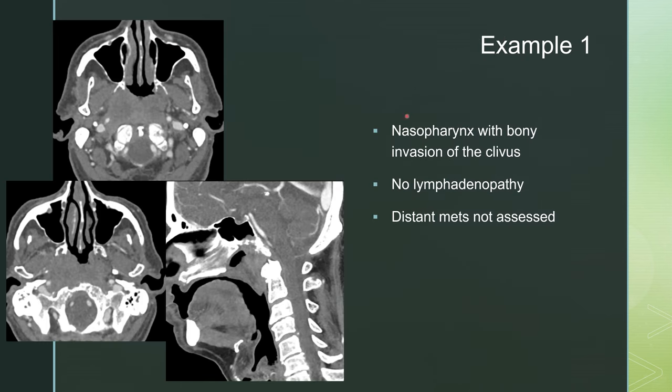Example one: you can see a large soft tissue mass filling the nasopharynx, a little asymmetric to the right. Here's the pterygoid plate and the carotid space, with soft tissue extending into that carotid space. Key things to look for are erosions of adjacent bony structures. Here you can see erosion of the cortex of the clivus — irregularity, lucency, and erosion of that cortex with soft tissue extending into the sphenoid sinus.